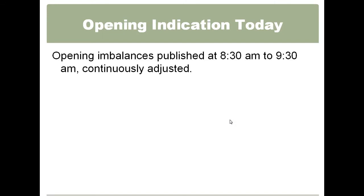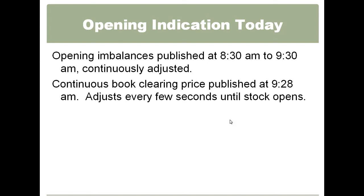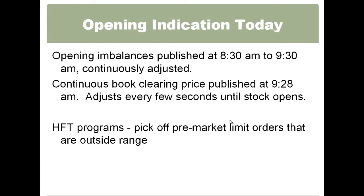Opening imbalances are actually published at 8:30 to 9:30 in the morning and continuously adjusted. At 9:28, two minutes before the open, they publish an opening indication price — they will say a stock like Johnson & Johnson is predicted to open at 92.50. That will adjust continuously: as more sell orders come in that price will fall, as more buy orders come in it will rise. That's information available right on your ready system — great information to know. High-frequency traders have specialized in picking off any limit orders that are outside of the range.